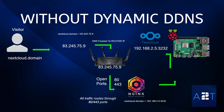Our router is at 83.245.75.9. It knows it's HTTP or HTTPS traffic on port 80 or 443, and the router will pass this down to Nginx. In Nginx it is configured that if that domain name comes through on these ports it will forward it to our Raspberry Pi at 192.168.2.5 on the port we have provided, which in this scenario is 3232.